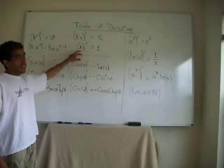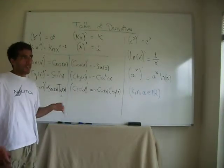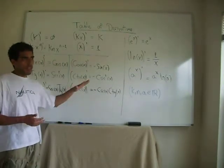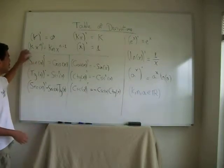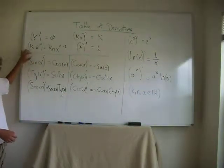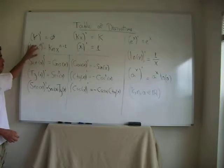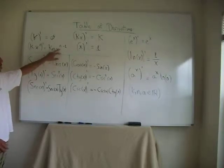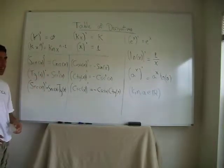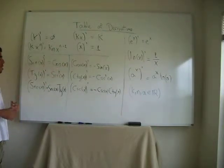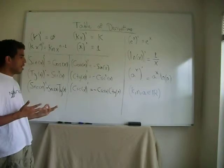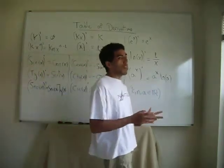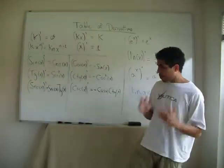The derivative of x, the identity function, is one, because the slope of y equals x is one. The derivative of k times x to the power of n is going to be k times n, x to the power of n minus one. We reduce by one the degree of the variable. It doesn't matter what degree we have over there. It can be an integral number. It can be a real number.